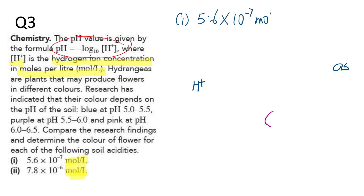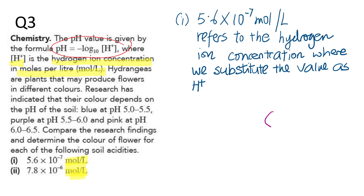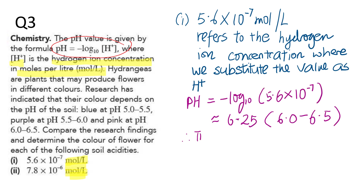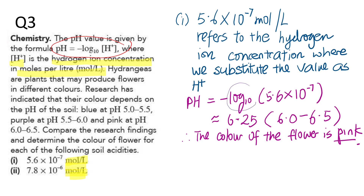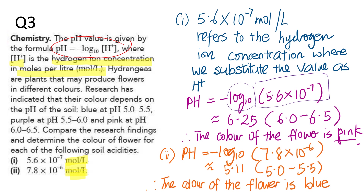For the first part, the hydrogen ion concentration is 5.6 times 10 to the power of negative 7. We substitute that value into H-plus. You can use a calculator — log base 10 is already the default log on your calculator, so just press negative log followed by 5.6 times 10 to the power of negative 7. You get 6.25, and since 6.25 is between the range of 6.0 and 6.5, the color of this flower is pink. For the second part, substituting again gives 5.11, which is between 5.0 and 5.5, and therefore we get a blue flower.